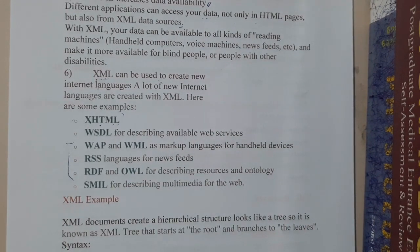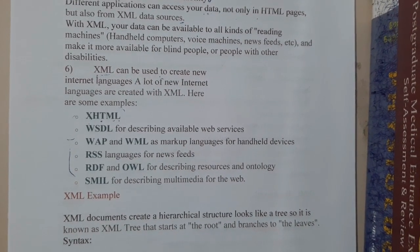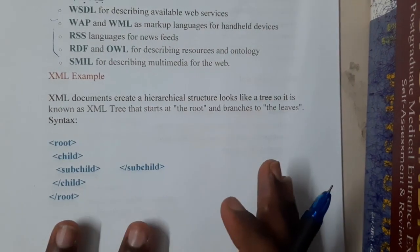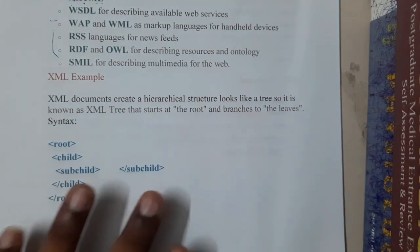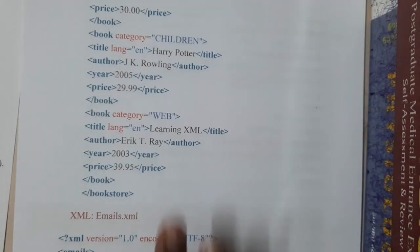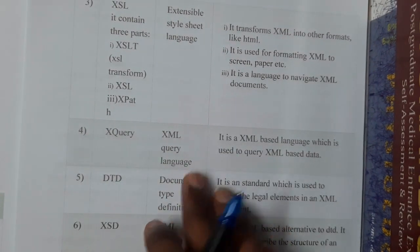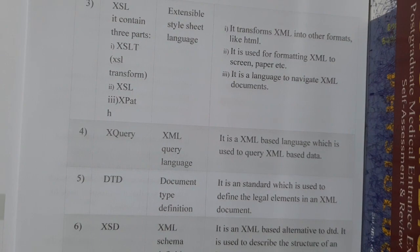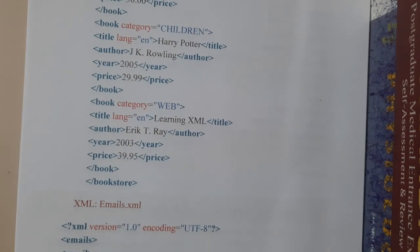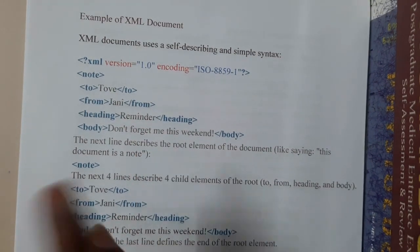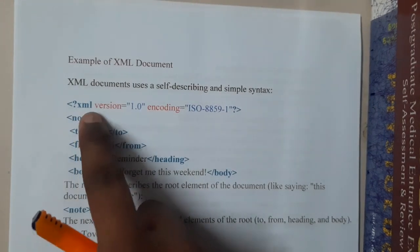Now for an example: any XML program can be understood using a tree structure. Each XML file starts with a declaration like: xml version and encoding such as ISO-8859-1. Let's look at a mail example. Here you can see tags like 'to', 'from', 'heading', and 'body' — none of these are HTML tags, they are all user-defined XML tags.